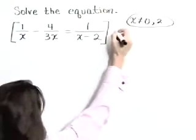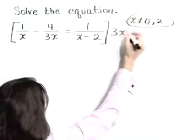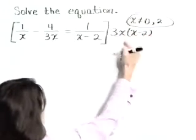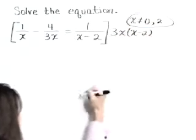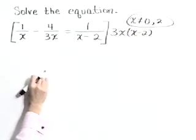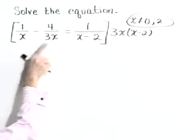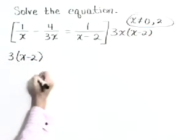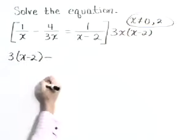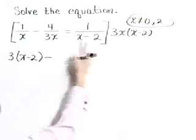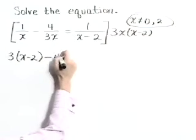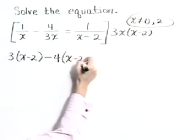So multiplying by 3 times x times x minus 2, and you can think of that as over 1, a value in the numerator. Taking that times 1 over x, the x's cancel, leaving 3 times x minus 2. Minus sign next. Multiplying times our next term, the 3x will cancel, leaving 4 times the quantity x minus 2.